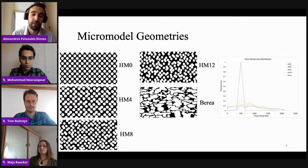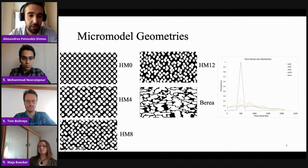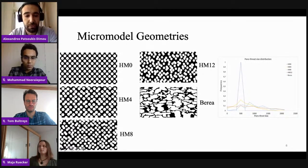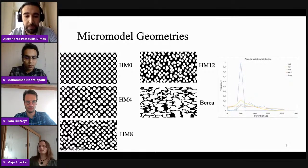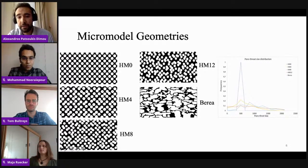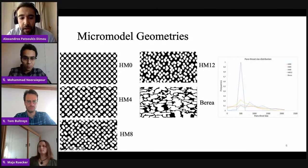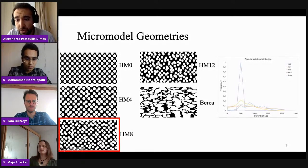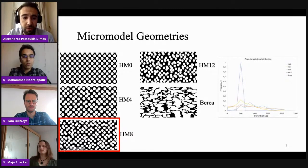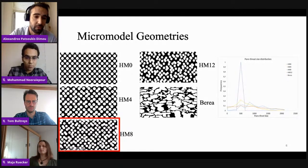In order to do this study we wanted to have some homogeneous and some heterogeneous micromodels. My supervisor, Hannah Menke, has created those patterns using Python. You can see we can start from very homogeneous micromodels like HM0 here at the top, to heterogeneous micromodels like HM12 here in the middle. And you can see here, I have an image of the Berea sandstone as well, an actual rock. You can see here at the right, we have a graph of the pore-throat size distribution of those different micromodels. You can see that HM8 micromodels starts being really close in terms of pore-throat size distribution to the Berea sandstone. Therefore, we're going to use HM8 to do a heterogeneous micromodel study and HM0 to do a homogeneous micromodel study.